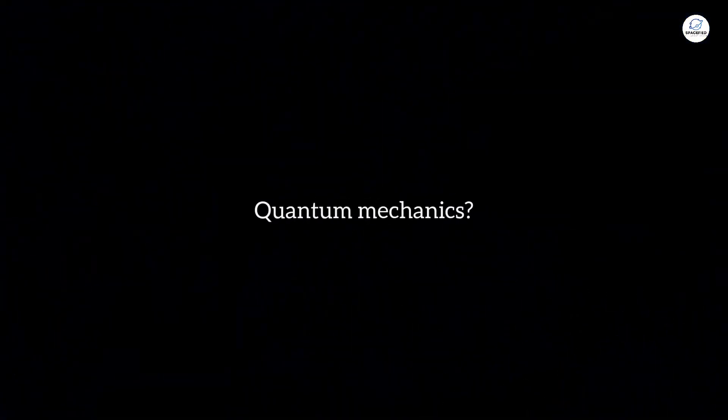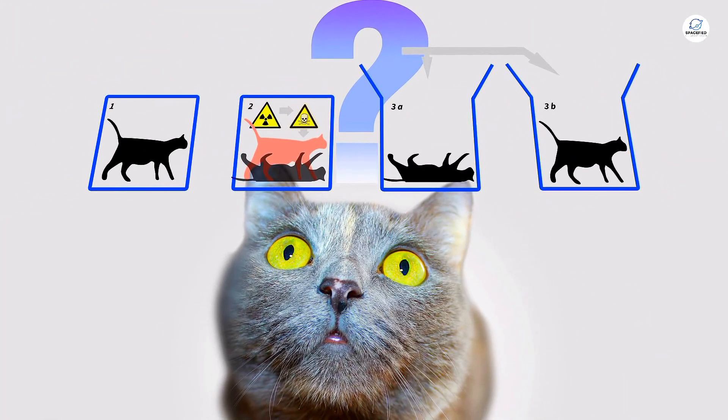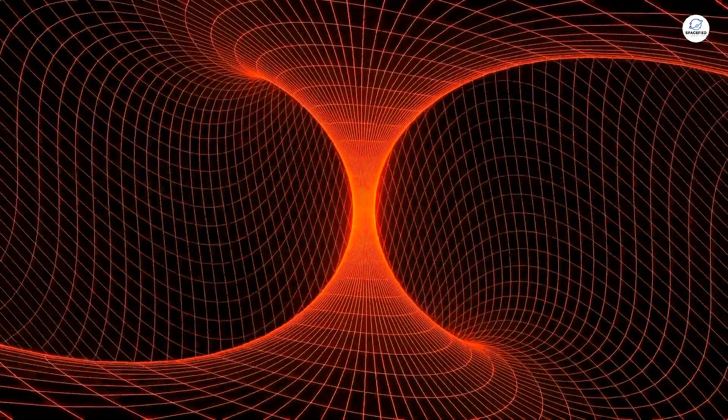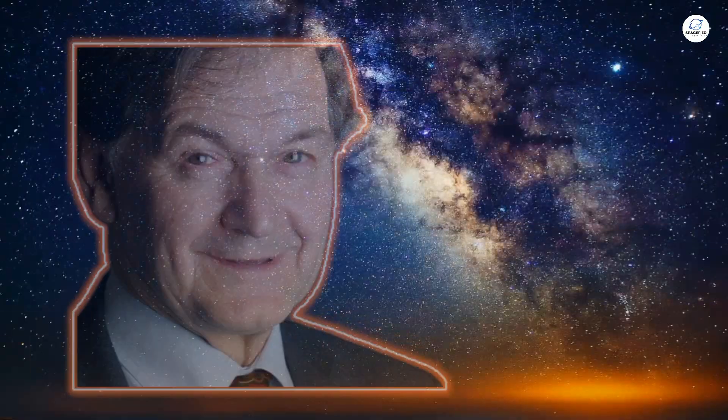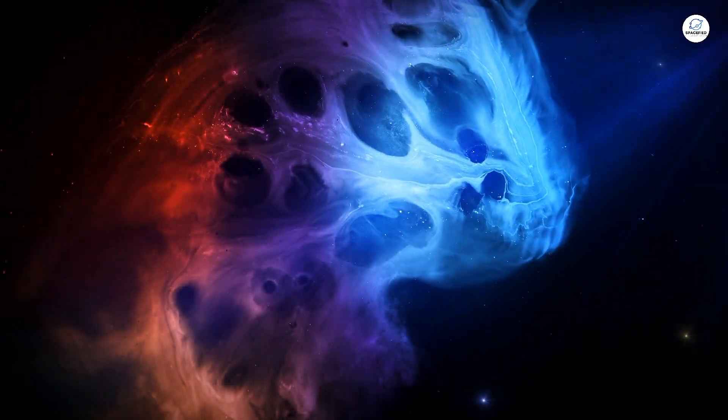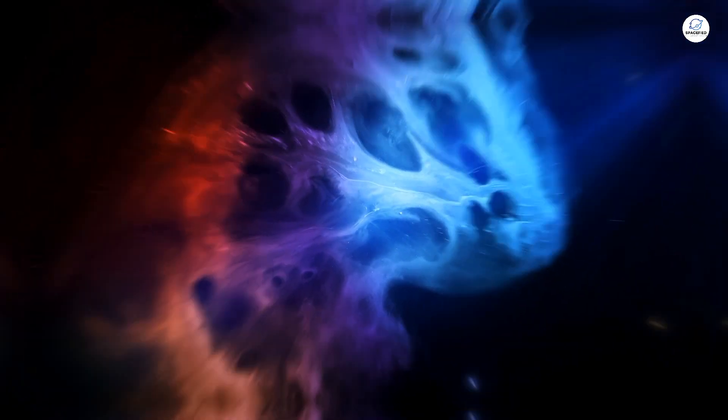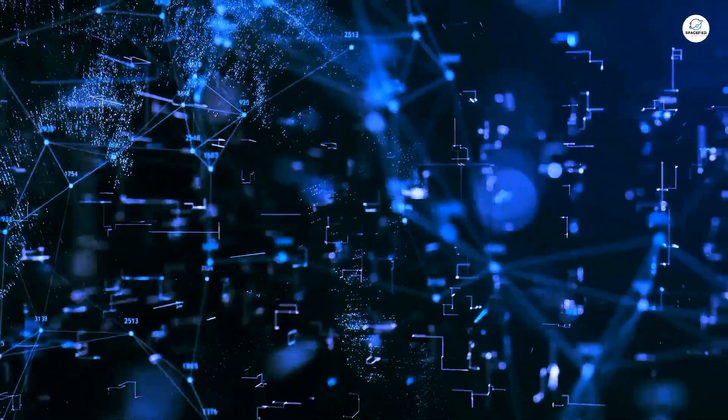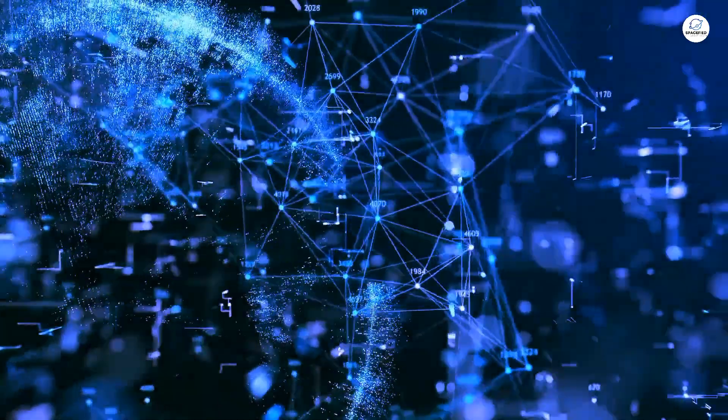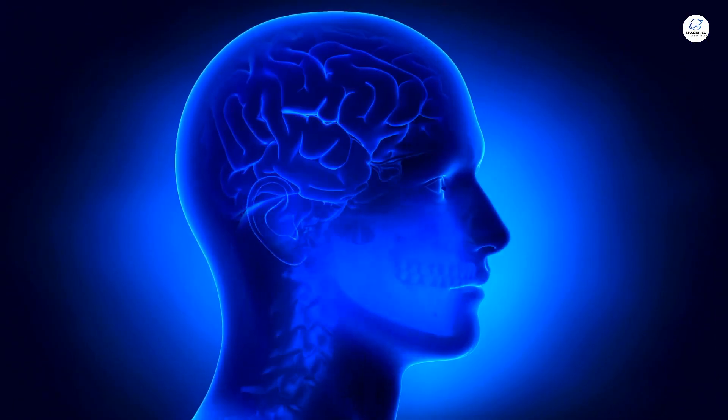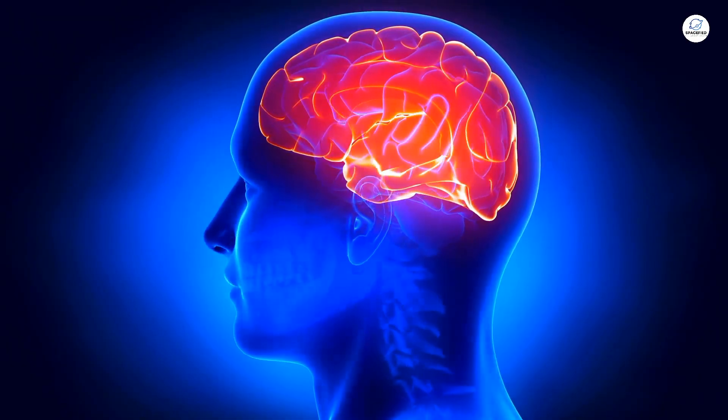Wait. Quantum mechanics. The same field that gave us Schrodinger's cat, particles being in two places at once, and the concept of entanglement. Exactly. Penrose's theory is based on something called Godel's incompleteness theorem. This theorem proves that no logical system, no matter how advanced, can prove every true statement. Penrose claims that our ability to know things transcends pure computation. In other words, human consciousness cannot be reduced to lines of code like a computer program.